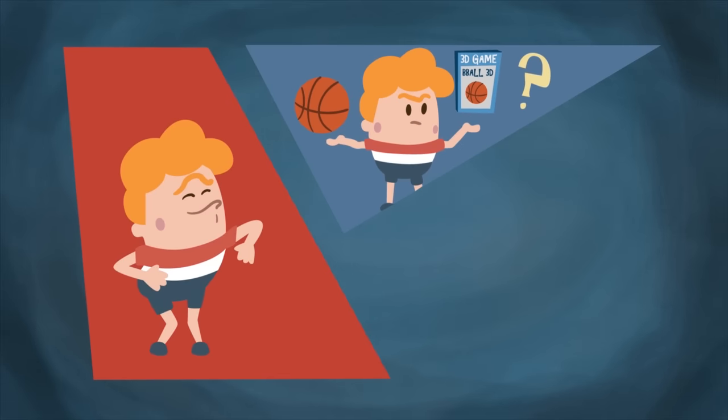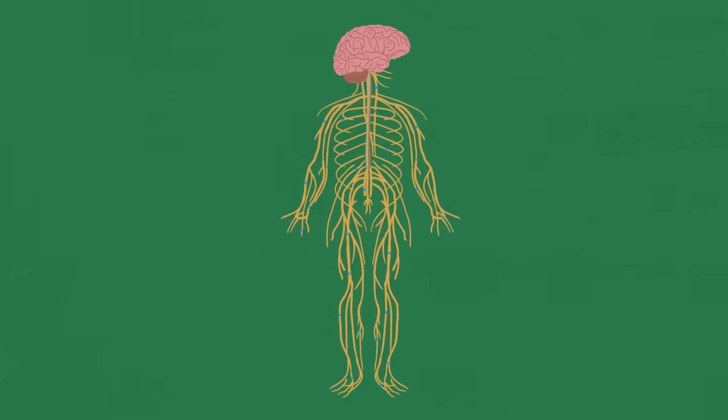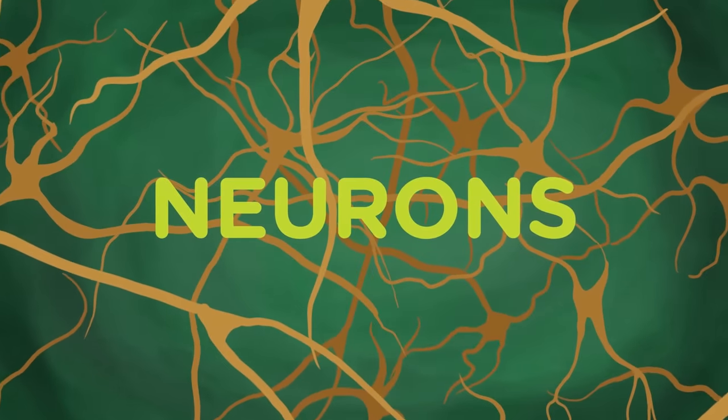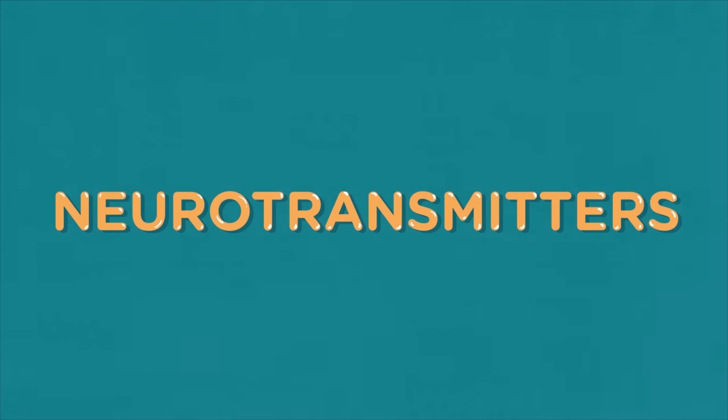Like movement, decision-making, memory, pretty much everything. The brain transmits information throughout the body using a system of interconnected nerve cells called neurons. Chemical messengers called neurotransmitters carefully move information from one neuron to the next.